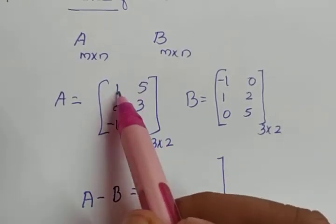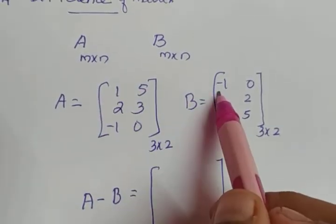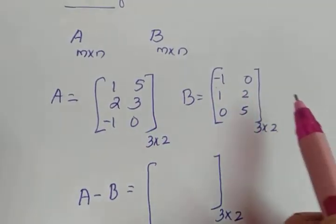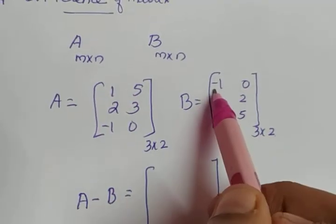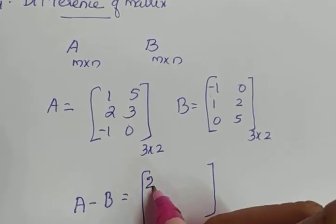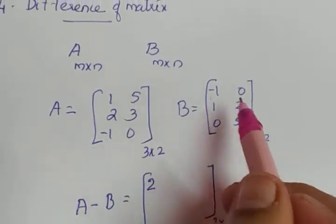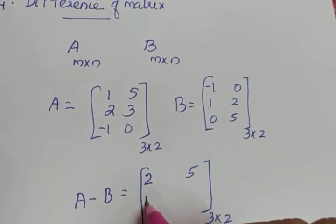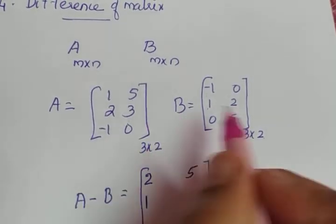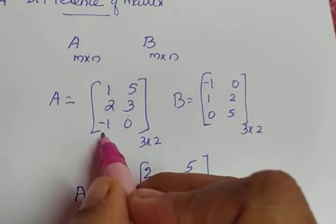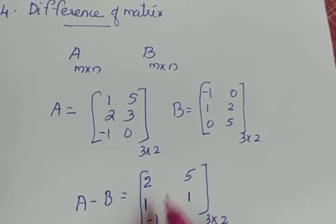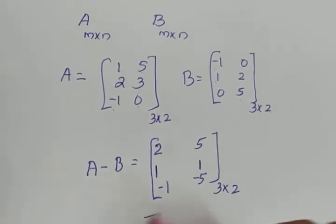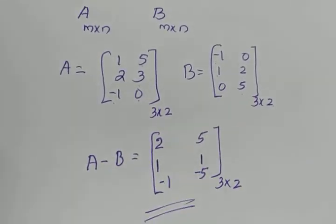When subtracting, we subtract the corresponding elements. So: 1 minus (−1) equals 2; 5 minus 0 equals 5; 2 minus 1 equals 1; 3 minus 2 equals 1; −1 minus 0 equals −1; and 0 minus 5 equals −5. So A minus B equals [2, 5; 1, 1; −1, −5].